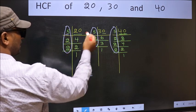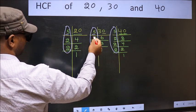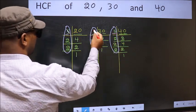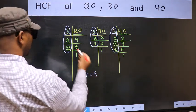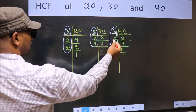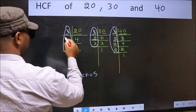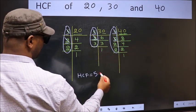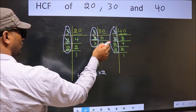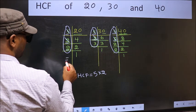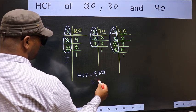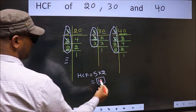Starting with the number 5. Do we have 5 here? Yes. Do we have 5 here? Yes. So note down 5. Next number, 2. Do we have 2 here? No. So no need to check in the other place. No more numbers have been left out. Therefore our HCF is 5 × 2 = 10. 10 is our HCF.